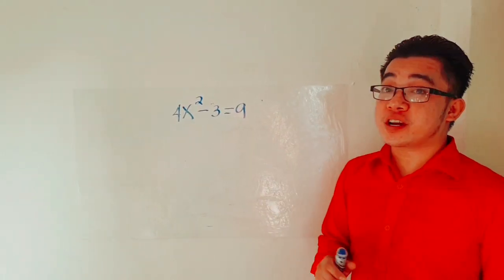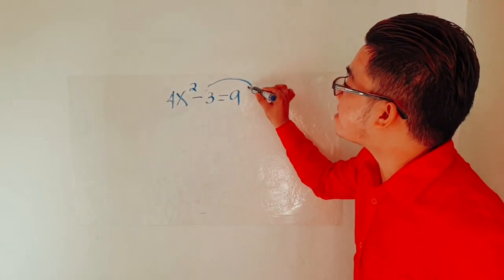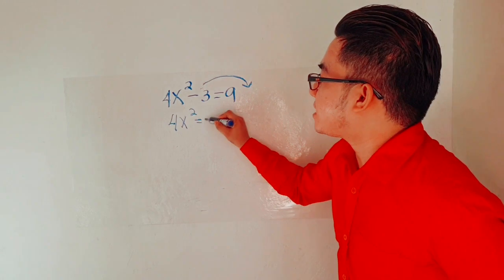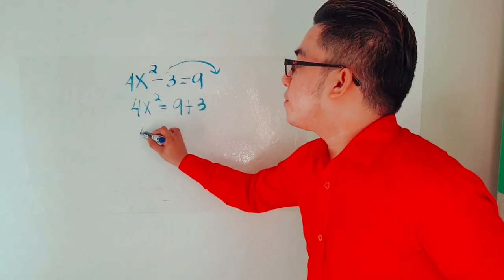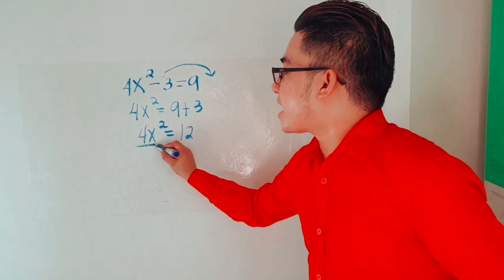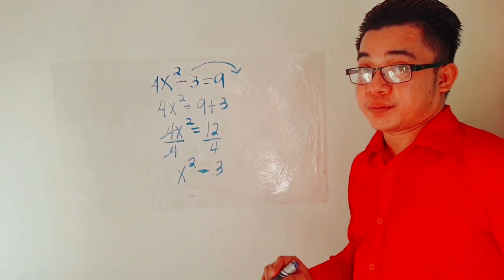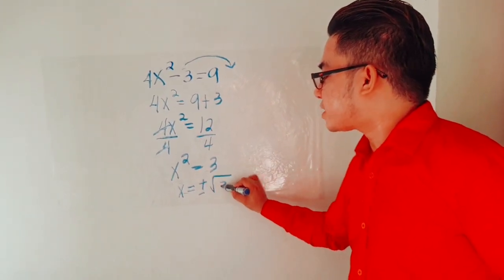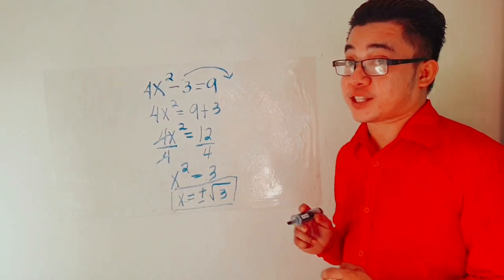Example number 7: 4x squared minus 3 is equal to 9. The first process is to transpose negative 3 to the other side, so 4x squared is equal to 9 plus 3, which equals 12. Then divide both sides by 4, giving x squared is equal to 3. Extract square roots: x is equal to positive and negative square root of 3. Since 3 is not a perfect square number, this is already the final answer.